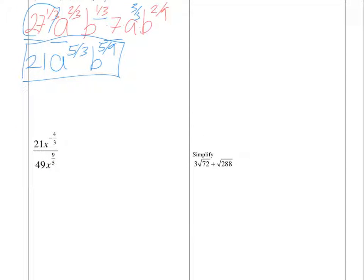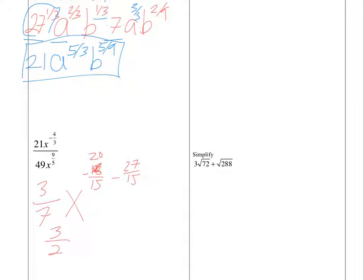For the next problem, we're going to do some reducing first. 21 over 49 can reduce to 3 sevenths. Then x to the negative 4 thirds over x to the 9 fifths. I'm going to write both of those in terms of 15ths — that's my least common denominator. We get negative 20 over 15, and then we subtract 27 over 15. When I combine those two, I get x to the negative 47 over 15. I don't want that negative exponent, so I'm going to rewrite this as 3 over 2 times x to the 47 over 15.